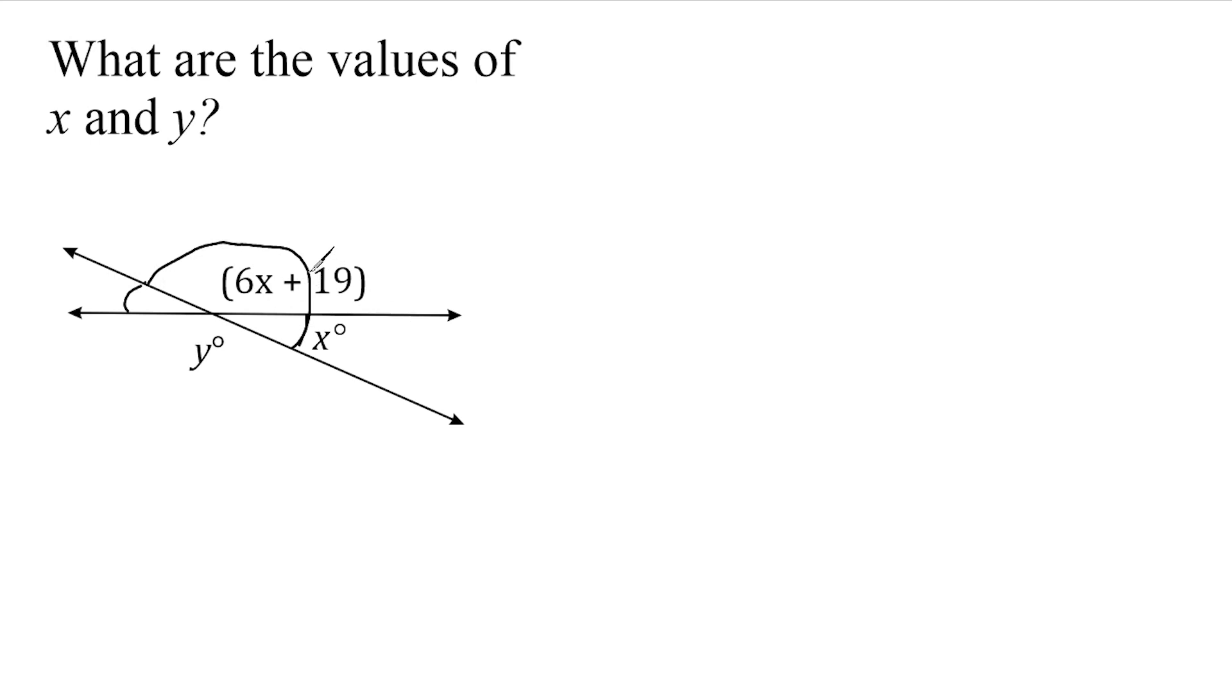So what we're going to do is take this expression here and this x right here, and we're going to add them together and set that sum equal to 180 degrees. So we're going to write 6x plus 19, which represents this obtuse angle right here, and add that to this acute angle here represented by x and say that the sum of those two angles is equal to 180 degrees.